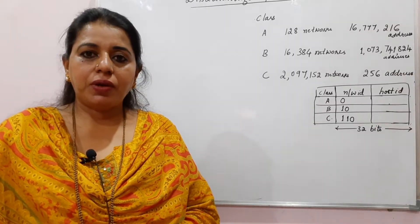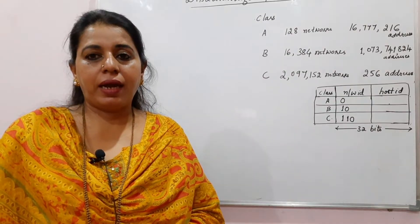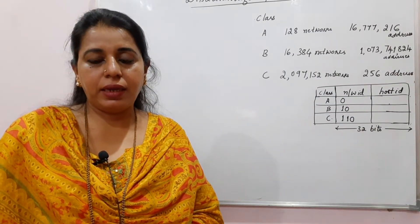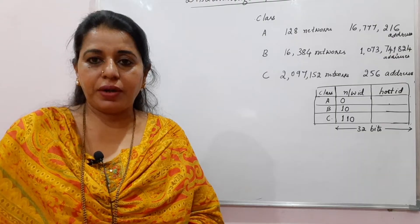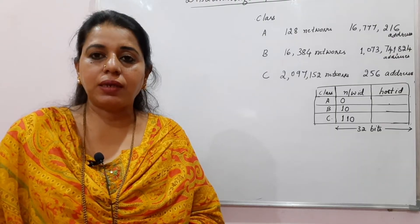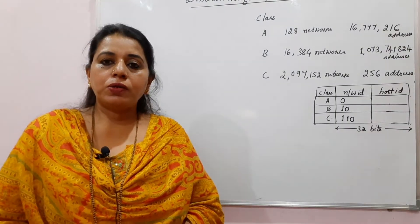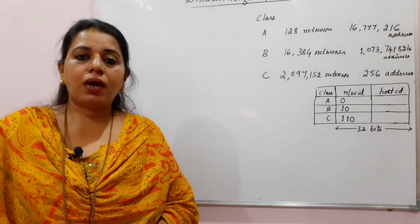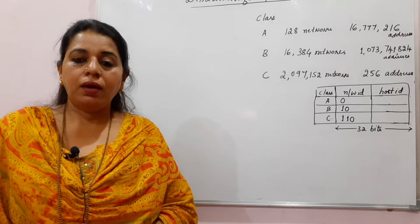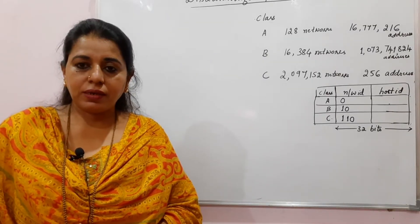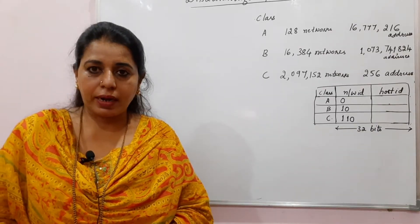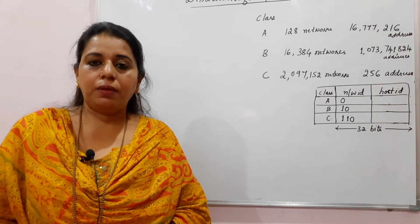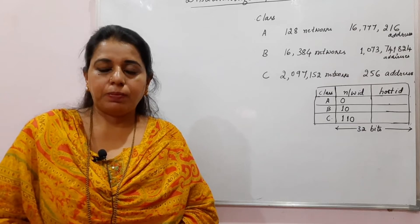In my previous video lecture, I have explained in detail about class A, class B, class C, class D and class E addressing — these are the different types of classes in classful addressing. And also for each class, I have explained how to determine the network address, that is the first address, and the last address, that is the broadcast address, in class A, class B, and class C — with examples.